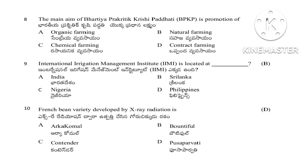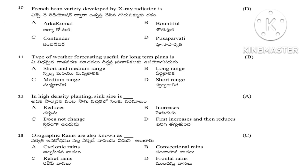Question 11: Type of weather forecasting useful for long-term plants — short and medium range, long range, medium range, or short range. The answer is long range, as it is used for long-term planning. Question 12: In high density planting, sink size — reduces, increases, does not change, or first increases then decreases. The answer is reduces. Question 13: Orographic rains are also known as — cyclonic rains, convectional rains, relief rains, or frontal rains. The answer is relief rains.